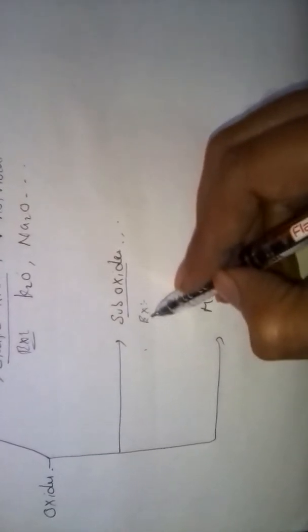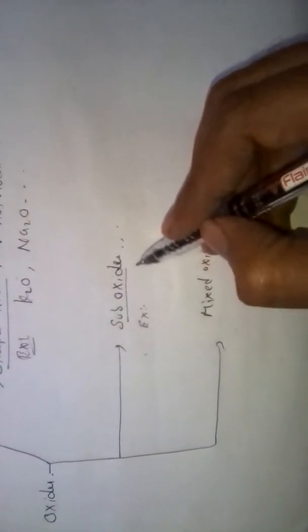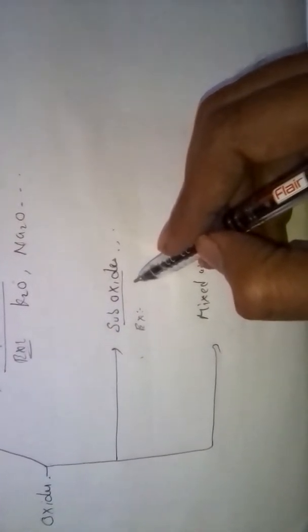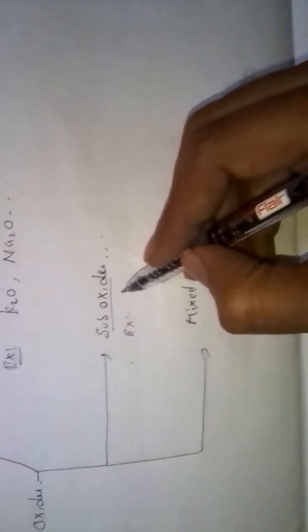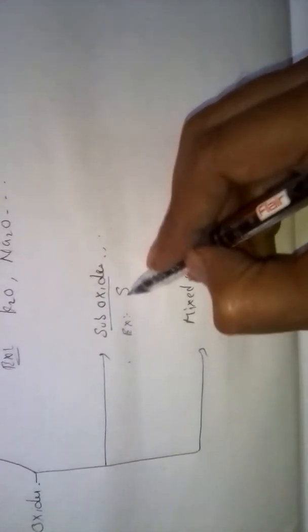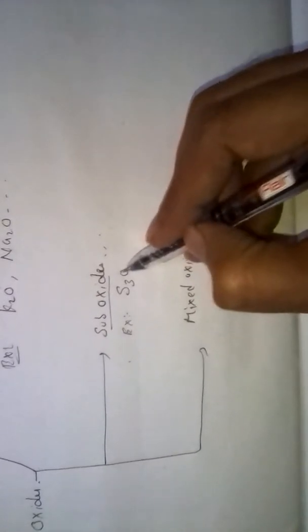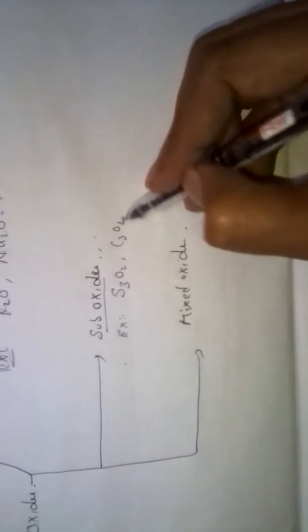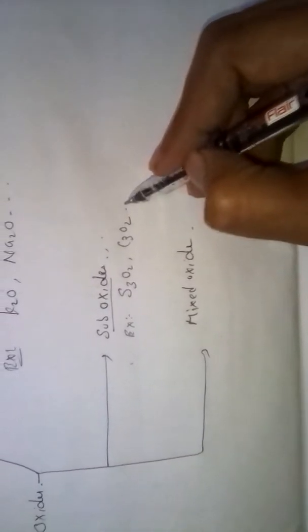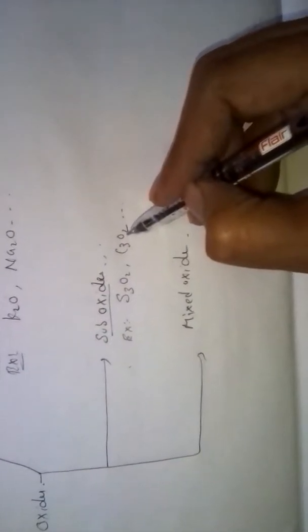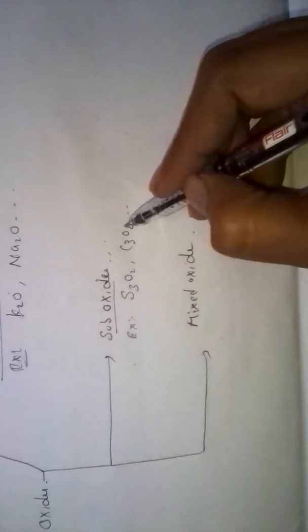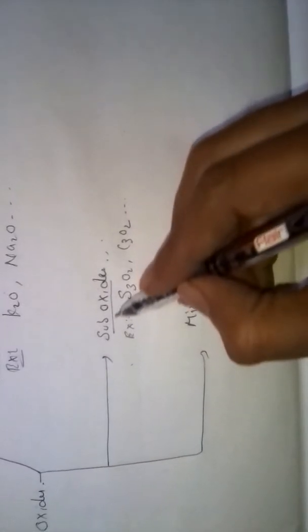Sub Oxides also violate the valency rule. They contain less oxygen content than the element. For example, S3O2 and C3O2 and so on. They contain less oxygen content. These are called Sub Oxides.